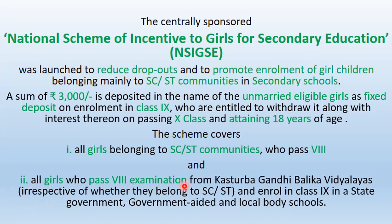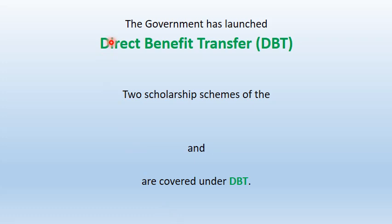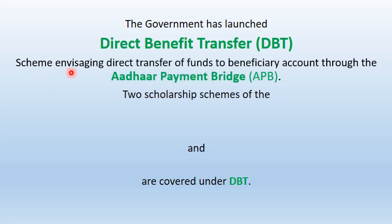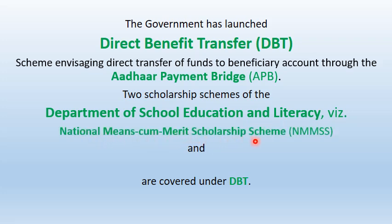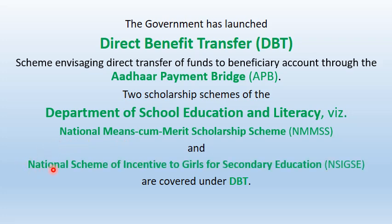The scheme covers all girls belonging to SC or ST communities who pass class 8, and all girls who pass class 8 from Kasturba Gandhi Balika Vidyalayas, irrespective of whether they belong to SC or ST communities, and enroll in class 9 in state government, government-aided, and local boarding schools. The government has launched Direct Benefit Transfer (DBT); both NMMSS and NSIGSE are covered under direct bank transfer.